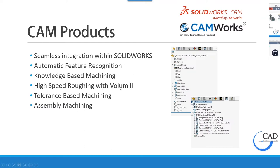We also have a high-speed roughing toolpath called Volumill, which is found in quite a few different CAM softwares. We have tolerance-based machining as well, which reads the tolerance information and GD&T from your parts and allows you to apply different strategies based on the tolerance. We are actually the only CAM software out there that is able to do this, so that's a really great feature.